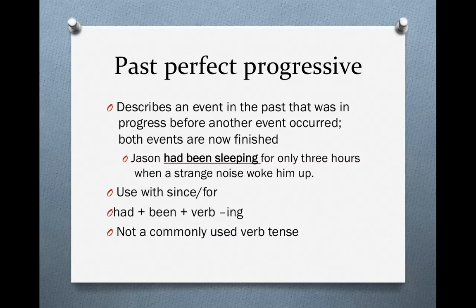As in the sentence: Jason had been sleeping for only three hours. The past perfect progressive is formed with had plus been plus the -ing form of the verb. It is also not a very commonly used verb tense.